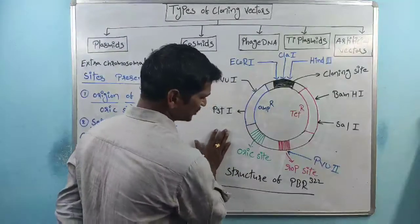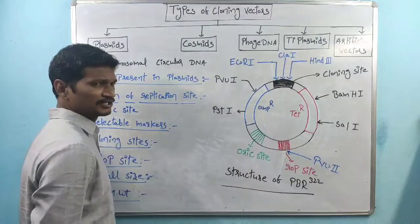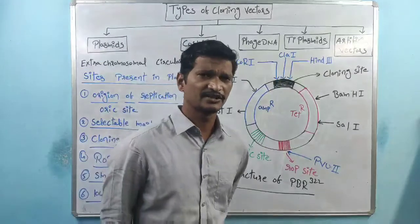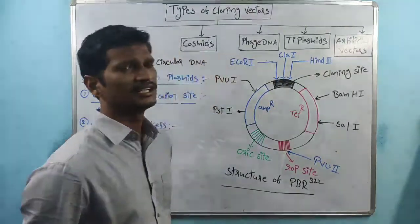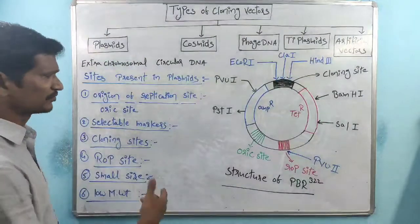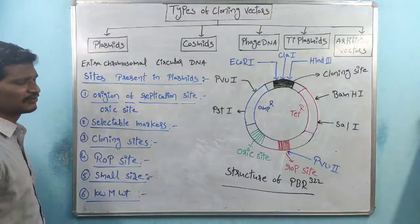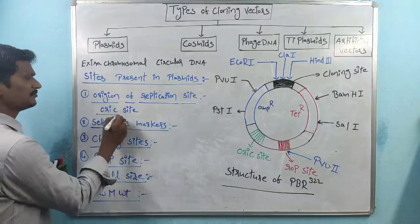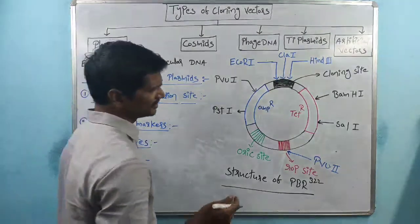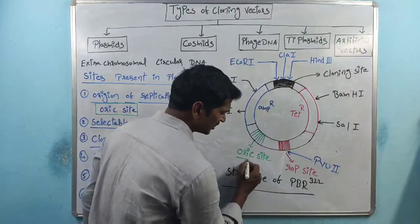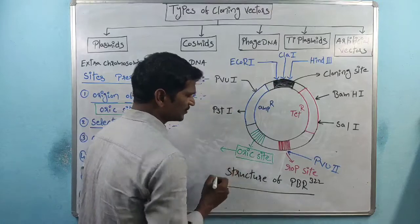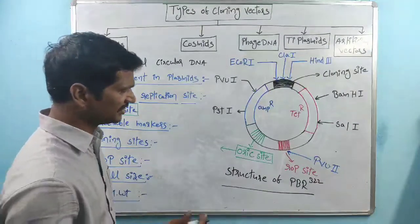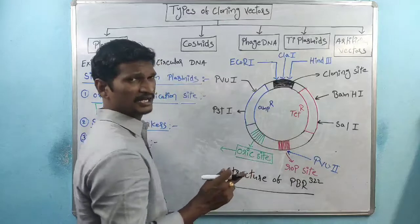This is the structure of PBR 322, which is one of the artificial vectors inserted into the E. coli cell. The vector contains different types of sites. The very first one is the origin of replication site, also called the OriC site. The OriC site is very important for the plasmid replication process — it involves the initiation of plasmid replication.